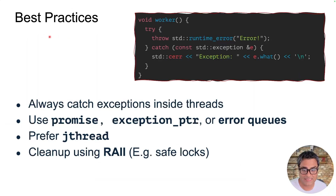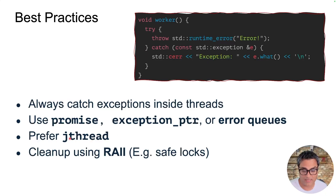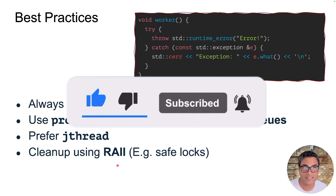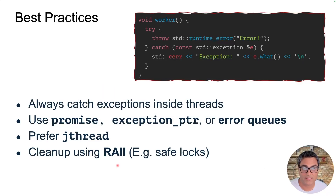Here's a summary of best practices: always catch exceptions inside threads or a function in their call stack. If you want to transfer the exception to the launcher thread, use promise and future, exception pointer, or error queues. Prefer jthread whenever the tiny overhead is not important, so that you get exception safety and other benefits. And always try to use RAII to write safe code. Thank you so much for watching this video. If you found it useful, please like it, comment, and share it with your friends, and support me by subscribing to my channel. Thanks a lot, and I'll see you in my next video.